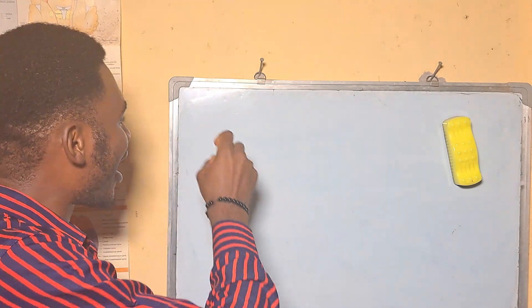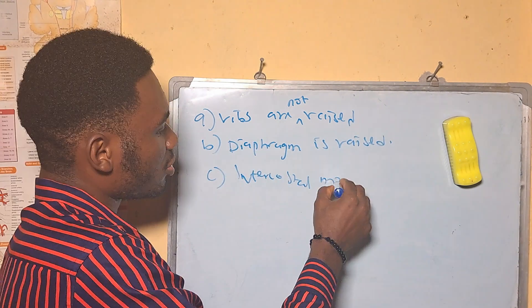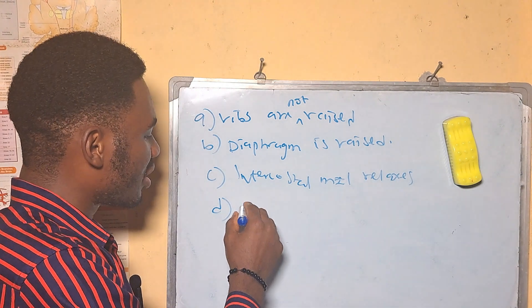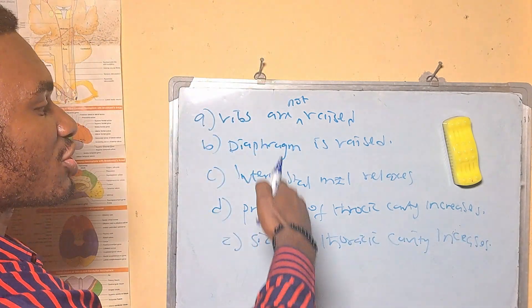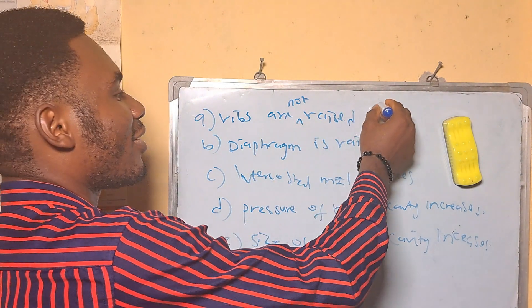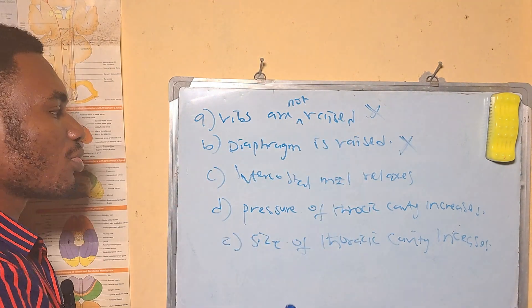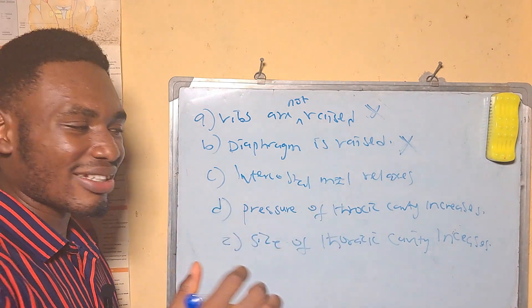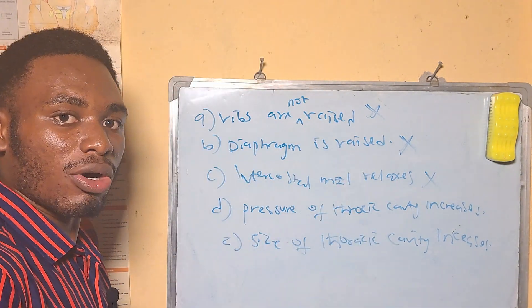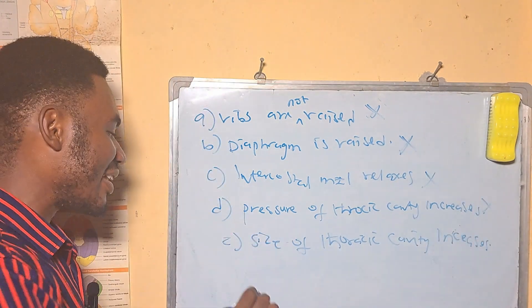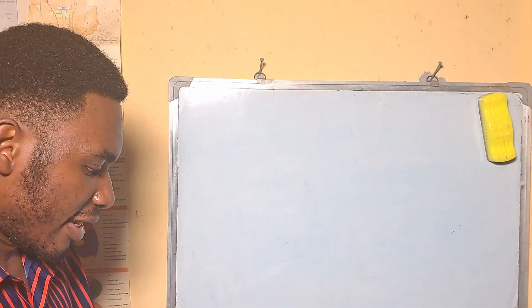Which of the following statements is true of inhalation in humans? A: ribs are raised, B: diaphragm is raised, C: intercostal muscles relax, D: pressure of the thoracic cavity increases, E: size of the thoracic cavity increases. During inhalation the diaphragm is not raised but flattened, intercostal muscles contract (not relax), and pressure in the thoracic cavity decreases so air rushes in. The correct answer is E — the size of the thoracic cavity increases as the ribs move upward and forward.